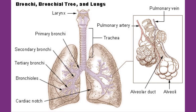At the level of the fifth thoracic vertebra, the trachea divides into the right and left primary bronchi. The bronchi branch into smaller and smaller passageways until they terminate in tiny air sacs called alveoli. The cartilage and mucous membrane of the primary bronchi are similar to that in the trachea. As the branching continues through the bronchial tree, the amount of hyaline cartilage in the walls decreases until it is absent in the smallest bronchioles, while the amount of smooth muscle increases. The mucous membrane also undergoes a transition from ciliated pseudostratified columnar epithelium to simple cuboidal epithelium to simple squamous epithelium. The alveolar ducts and alveoli consist primarily of simple squamous epithelium, which permits rapid diffusion of oxygen and carbon dioxide.